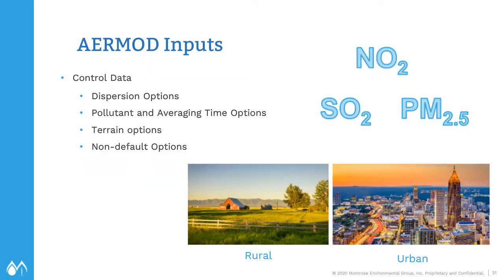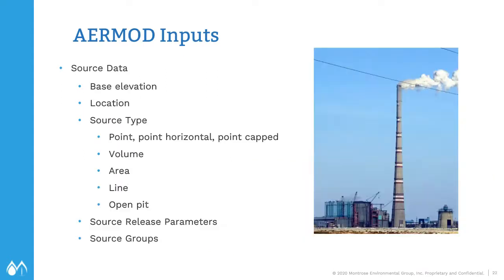What exactly goes into AERMOD? First you have your control data, which includes dispersion options — you determine with AERSURFACE whether it's a rural or urban area — your pollutant, whether it's NO2, SO2, or PM2.5, and your averaging time options, since each pollutant has a different averaging time. You also have terrain options and non-default options. Next, you have your source data: the base elevation, the location, and the source type — how to appropriately represent and model your source. You can also use source groups if you want to look at the impact from one or two of your stacks separately.